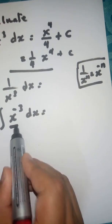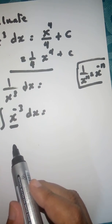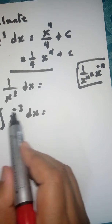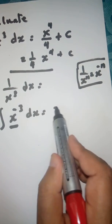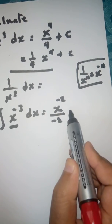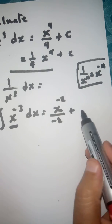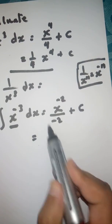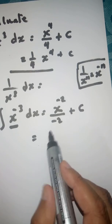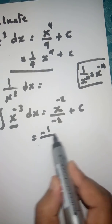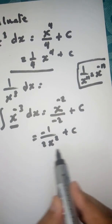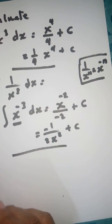Now X to the power negative 3 is a power form. Add 1 to the old power: negative 3 plus 1 equals negative 2. Divide by negative 2, then add the constant of integration. Simplifying: positive divided by negative gives negative, so the result is negative 1 over 2X squared plus C.